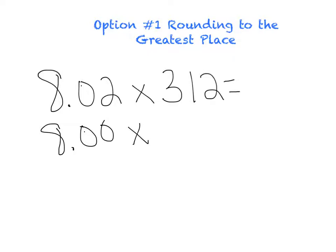Now I move over to my 312. I do the same exact thing. I look to the farthest left. That's a 3. And then I'm going to look to my right. Is that number 5 or greater? If it was, I would change that number. I would round up. I'd change it to a 4. But it's not. It's less than 5. So I'm going to leave it the same as a 3. Turn these others into 0.